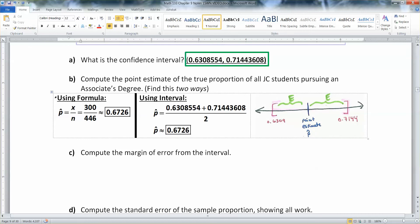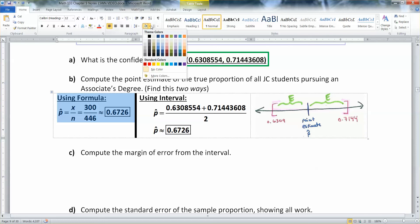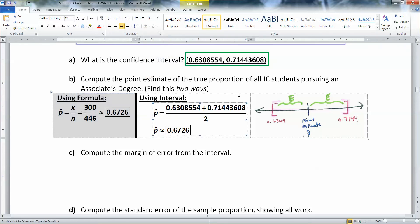Let me see that. I'm going to take this, I'm going to add them up, and I'll get that. Just to clearly separate the two methods, over here on the left side is the formula part. And then over here is using the interval, where you take the two numbers that you're given, 0.6308554 and 0.71443608, you add them up and you divide by 2. And you'll get 0.6726, which is the center, the point estimate in the middle.